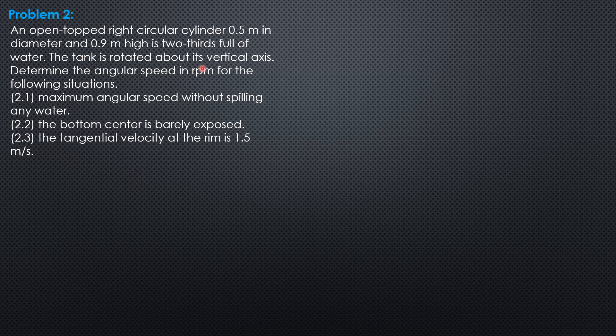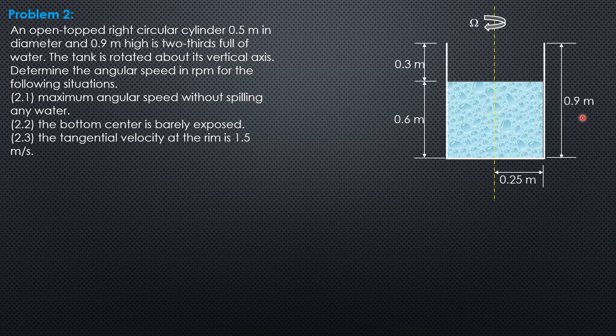So let's have the figure first. Two-thirds of 0.9, radius is half of 0.5, so 0.25 meter. The height is 0.9 and the tank is filled with water two-thirds full. So two-thirds of 0.9 is 0.6 meter. So meaning to say, this k here is 0.3 meter.